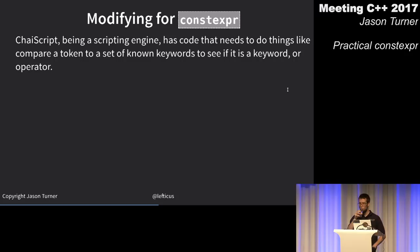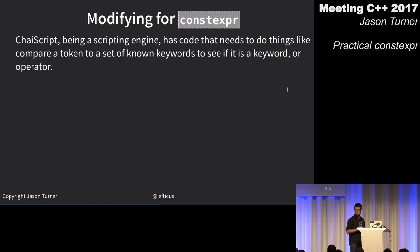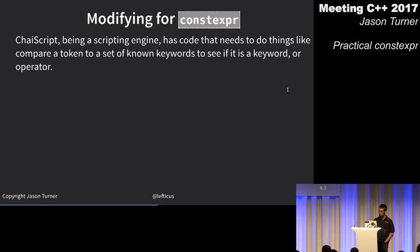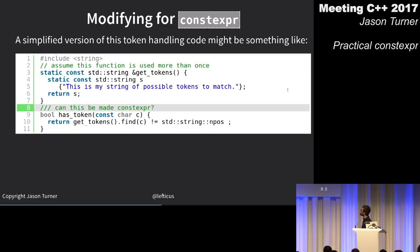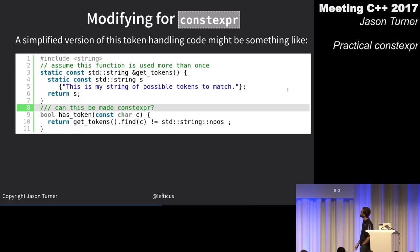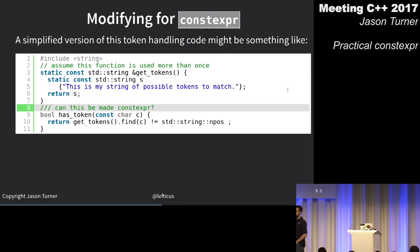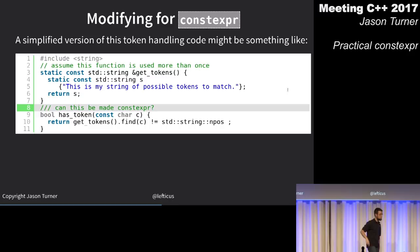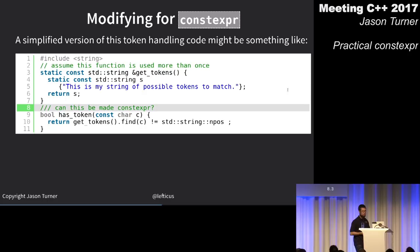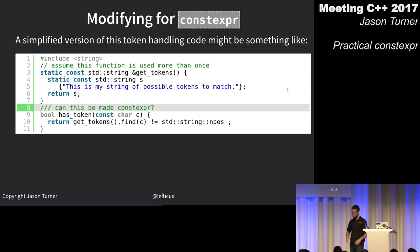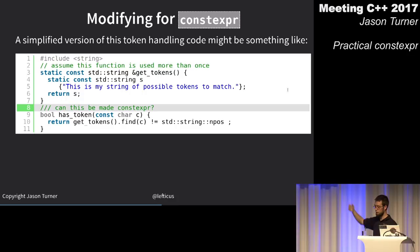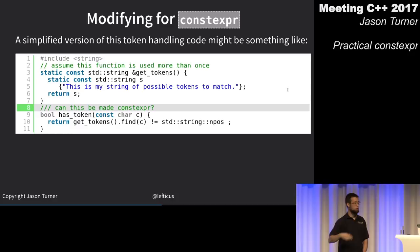ChaiScript needs to compare whether a parsed token belongs to a set of known keywords or operators. I have a simplified has_token function with a static const get_tokens function returning a static const string — done to avoid allocating the string every time. Can has_token be made constexpr as it stands?